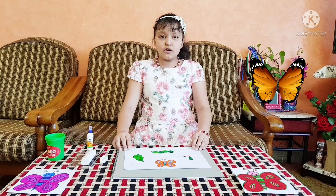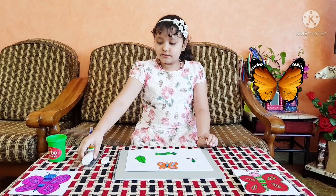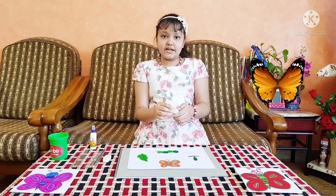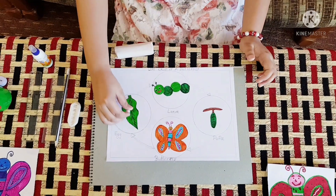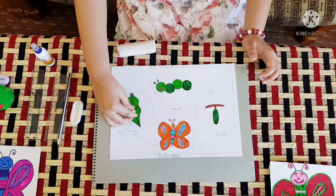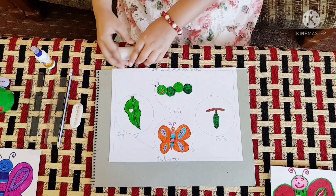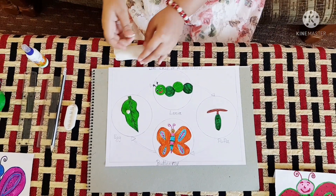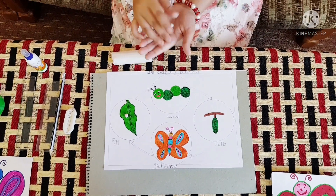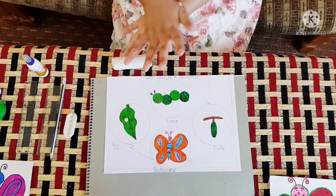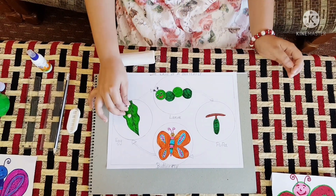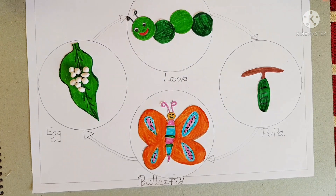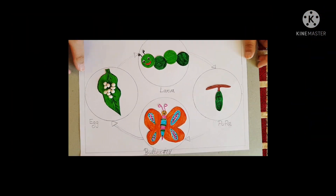After pasting all the pictures, first we have to take one white layer and make small small eggs, like this.